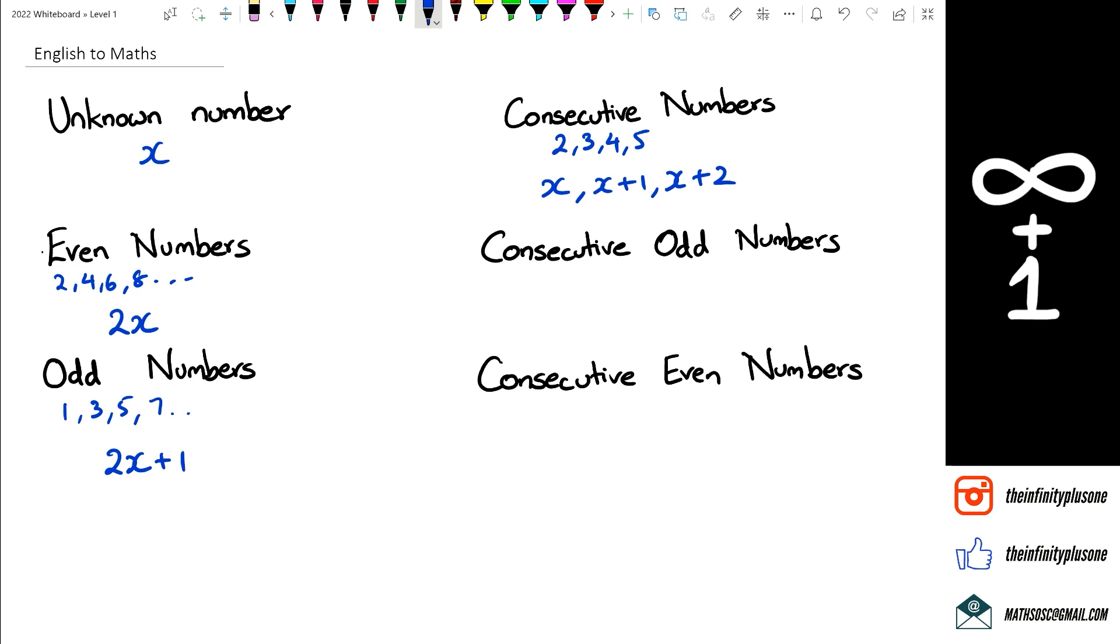Now if you think about consecutive odd numbers, your first consecutive odd number is going to be 2x plus 1. And of course, every odd number is getting 2 added onto it, so we're actually going to rewrite this as 2x plus 3. So what you'll notice is the numbers up here at the end are actually going to be going up by 2 because that actually gives us consecutive odd numbers.